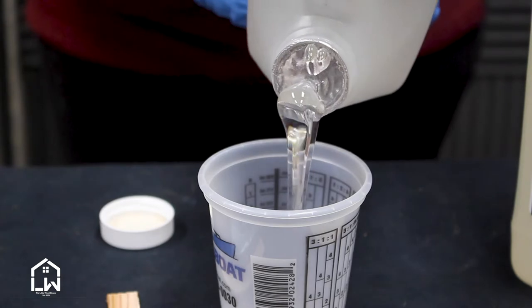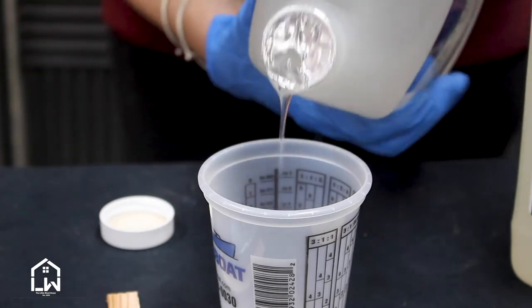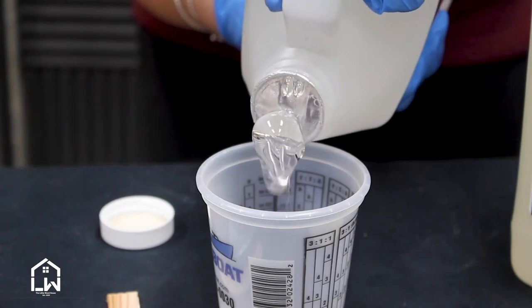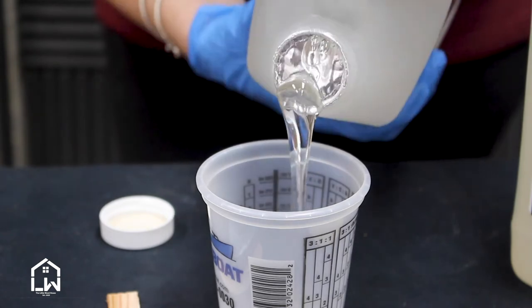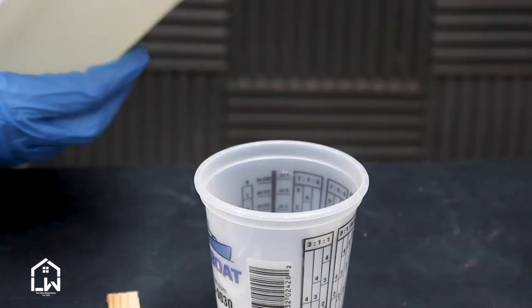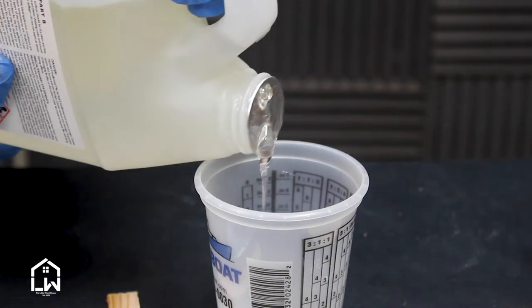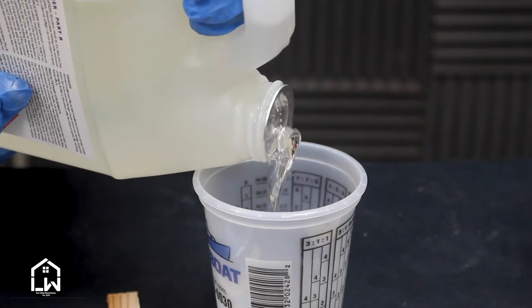This stuff pours pretty slow. If it was nice and warm in here, epoxy likes warmth, this would pour a lot smoother, but unfortunately it's not. All right, we got A. Now we're going to do B. Again, remember your epoxy likes warm weather.